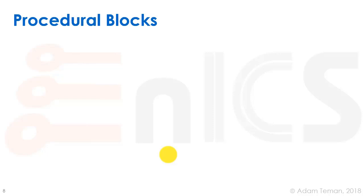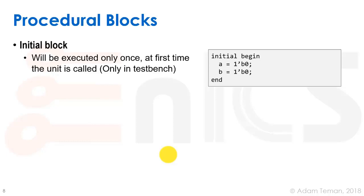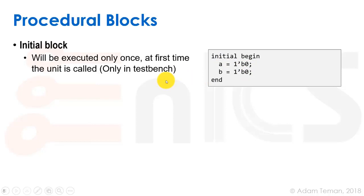Next we'll discuss the heart of Verilog: the procedural block. We start with the initial block, which is the behavioral high-level abstraction of Verilog. The behavioral level is non-synthesizable — it's not how we describe hardware, but how we describe tests. An initial block means we do something at time zero of simulation, executed only once. For example: 'initial begin a=0; b=0; end' — this sets a and b to zero at the start of simulation, but we can't do that in hardware.